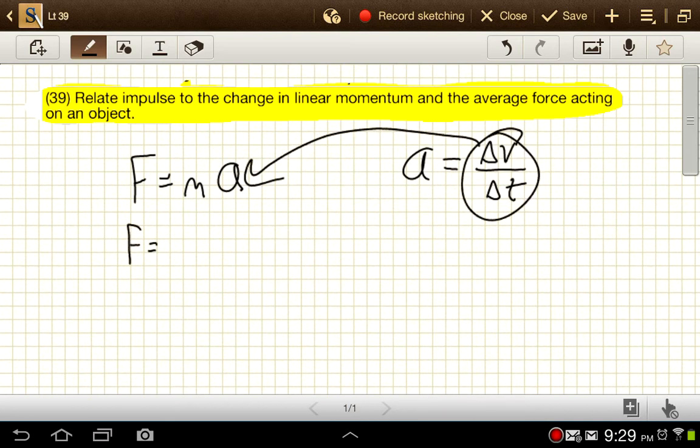So F equals m times Δv over Δt. And if I multiply both sides by Δt, I get F·Δt is equal to m·Δv.